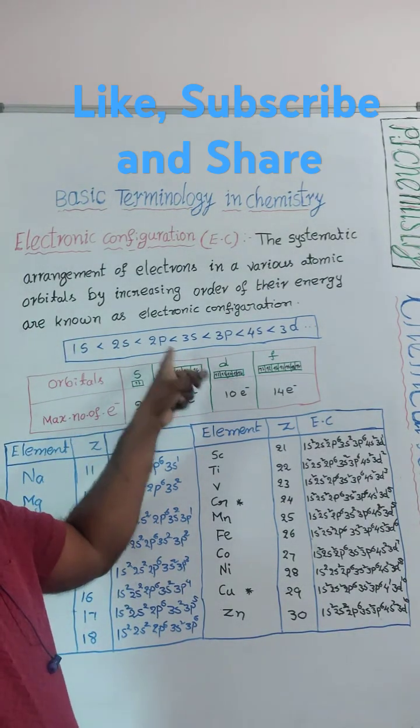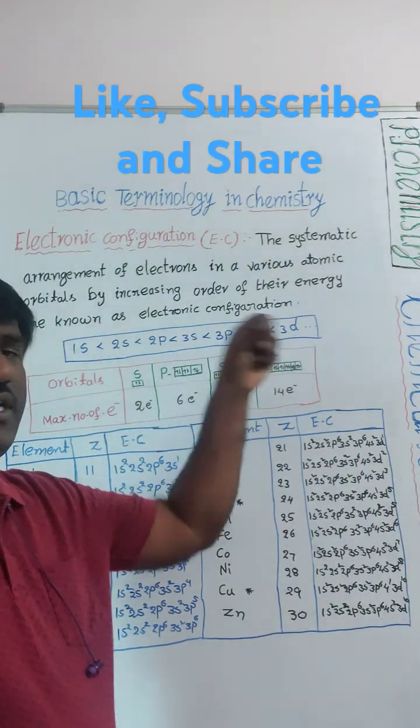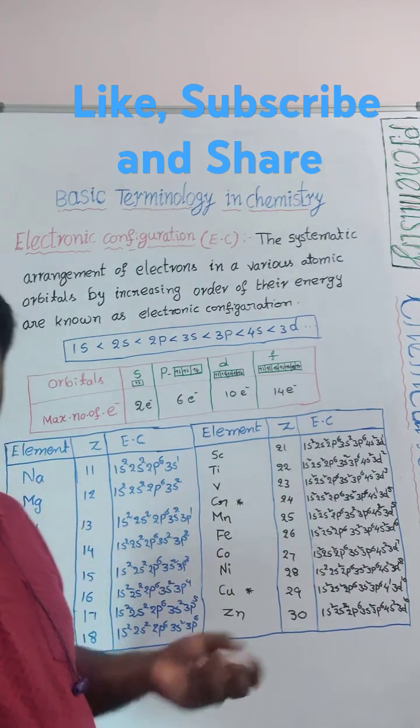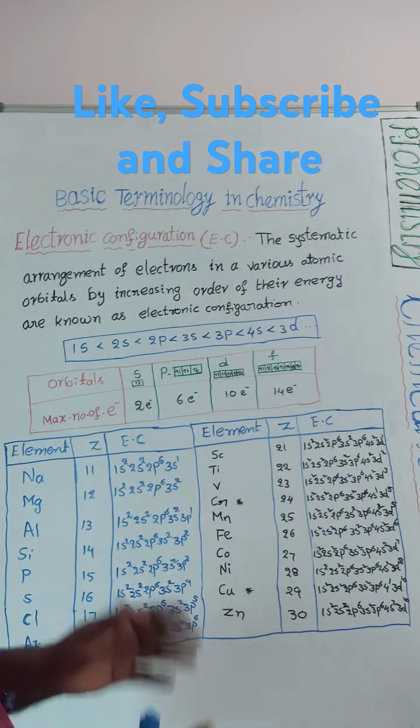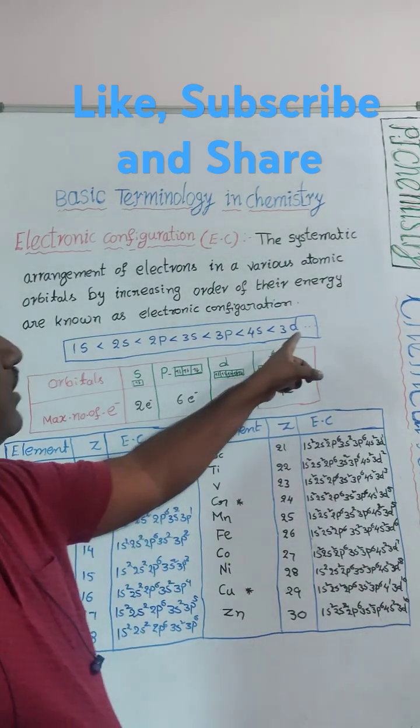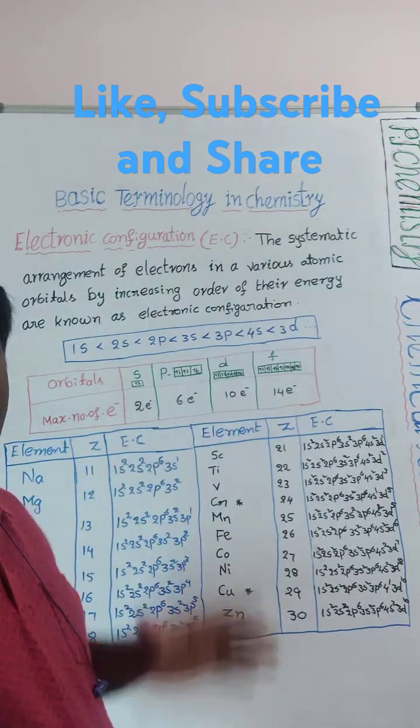The increasing order is 1s, 2s, 2p, 3s, 3p, 4s, 3d. Through the Aufbau diagram we already learnt this. For 30 elements till 3d, if you keep it in mind, enough.